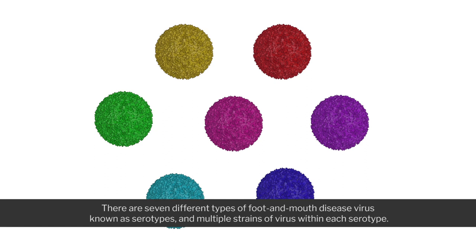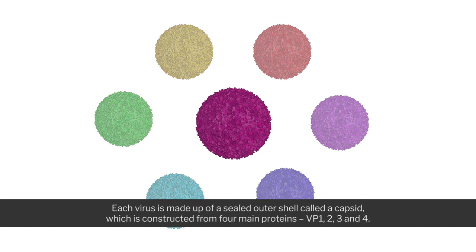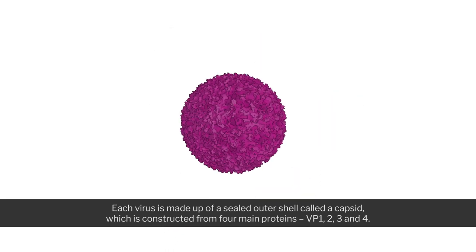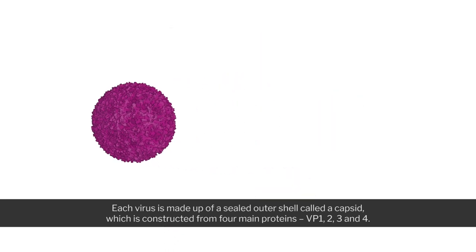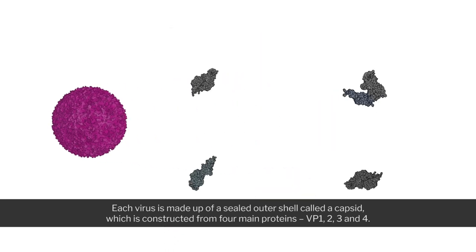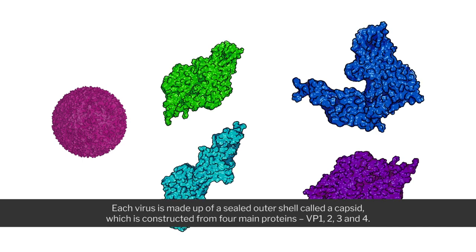Each virus is made up of a sealed outer shell called a capsid, which is constructed from four main proteins: VP1, 2, 3 and 4.